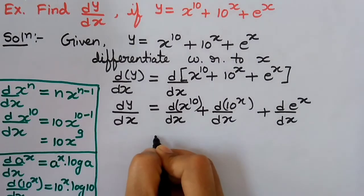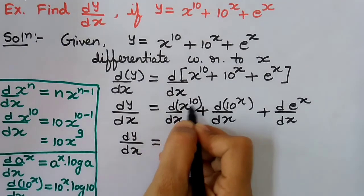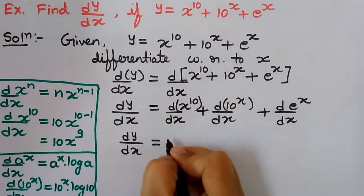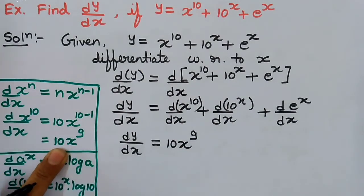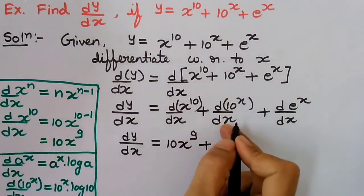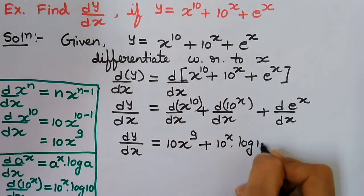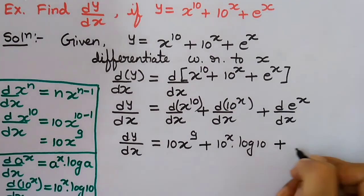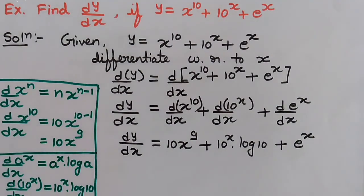So dy/dx equals: derivative of x^10, which is 10x^9, plus derivative of 10^x, which is 10^x times log 10, plus derivative of the exponential term e^x, which is e^x. So you should carefully study these examples and practice all the formulas from the list.